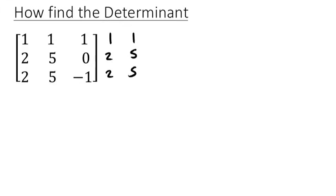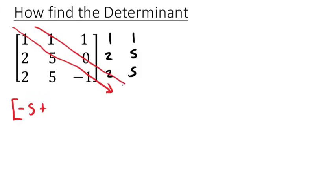Now I have two diagonals — the major diagonals and the minor diagonals. I'll start by multiplying what I have in the major diagonals. The first major diagonal gives us one times one times five, but that one is negative, so this gives us negative five. The second major diagonal has a zero, so everything there gives us zero. The third diagonal: two times five times one, that will be ten.